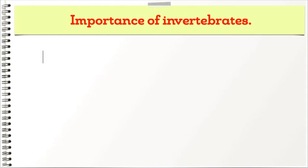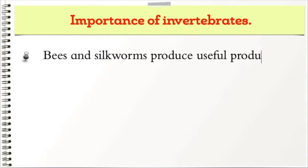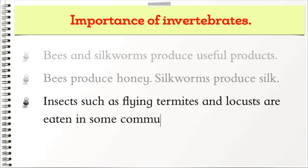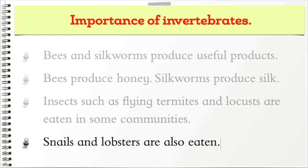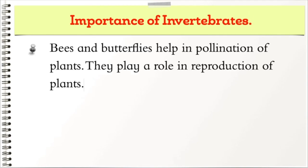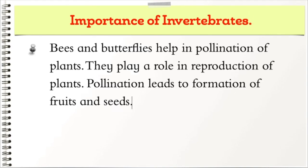What is the importance of invertebrates? Bees and silkworms produce useful products — bees produce honey and silkworms produce silk. Insects such as flying termites and locusts are eaten in some communities. Snails and lobsters are also eaten. Bees and butterflies help in pollination of plants, playing a role in reproduction. Pollination leads to formation of fruits and seeds.